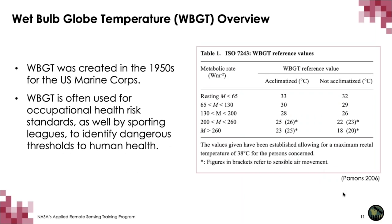Wet bulb globe temperature was created in the 1950s by the United States Marine Corps, and it was used to estimate heat stress and heat load among Marines — younger, fit people. It then evolved into a reference for occupational heat health standards used by the International Standards Organization, and it's widely used in occupational heat health, as well as by different athletic bodies to govern when sporting events should be canceled.